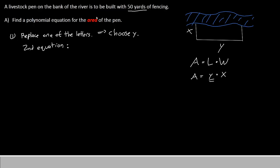Let's use the other piece of information. We know that it has 50 yards of fencing. So we have 50 equals something. Now, our fencing has one y and two x's. One on the left, one on the right.